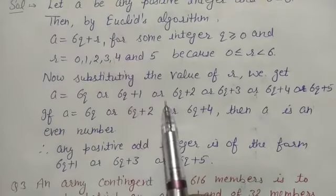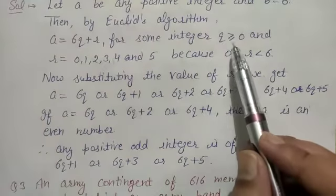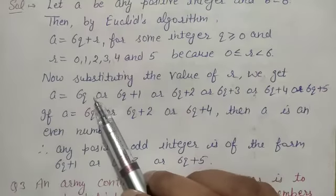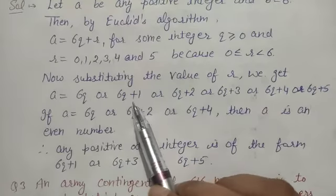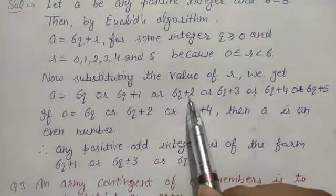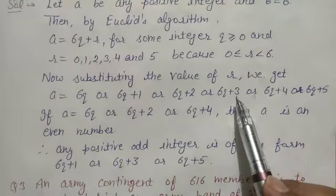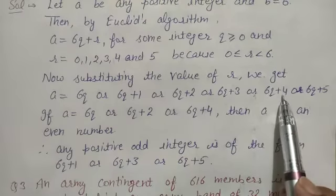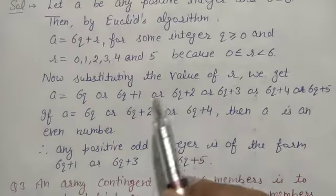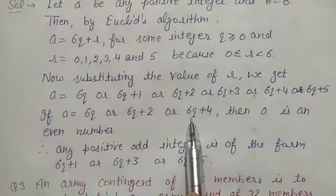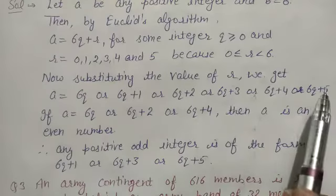Now putting the value of r in a equals to 6q plus r, we have a equals to 6q or 6q+1 or 6q+2 or 6q+3 or 6q+4 or 6q+5. For example, with q=1: 6 is even, 6+1=7 is odd, 6+2=8 is even, 6+3=9 is odd, 6+4=10 is even, 6+5=11 is odd. So a equals to 6q or 6q+2 or 6q+4 are even numbers. Therefore any positive odd integer is of the form 6q+1, 6q+3, or 6q+5.